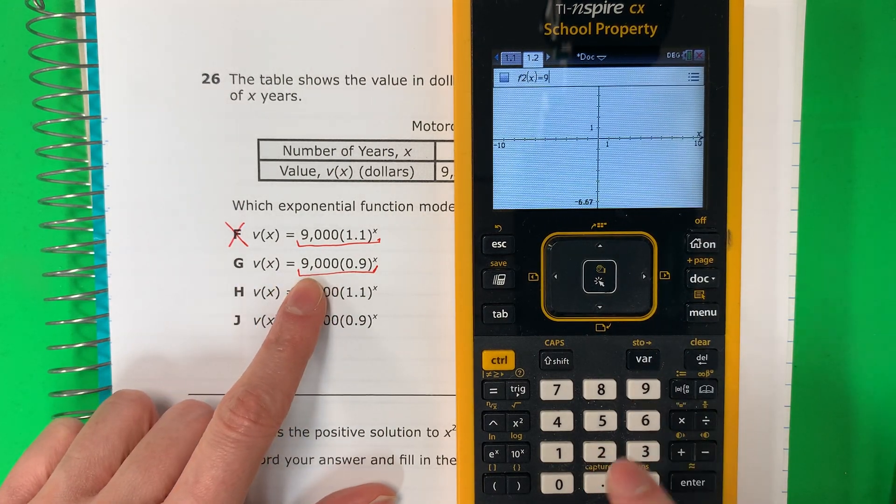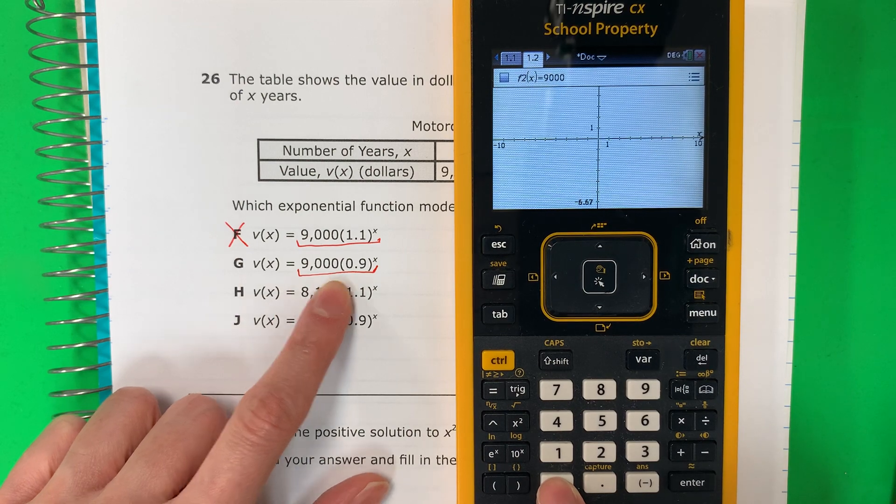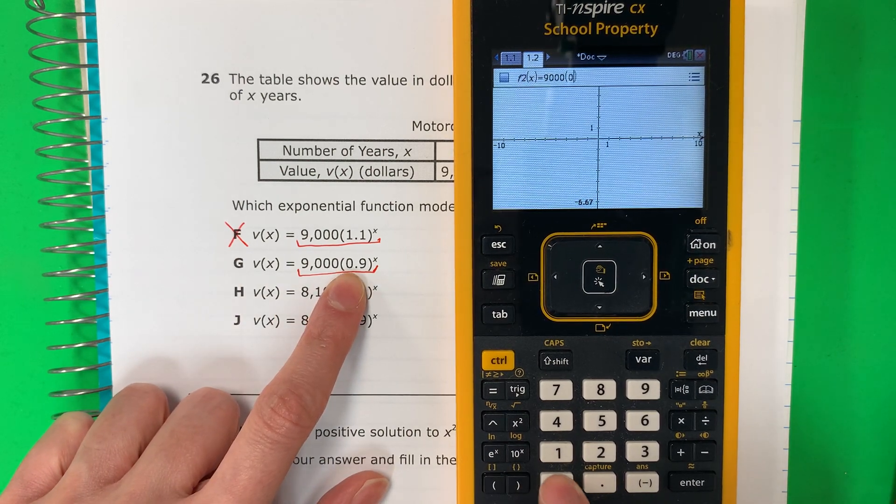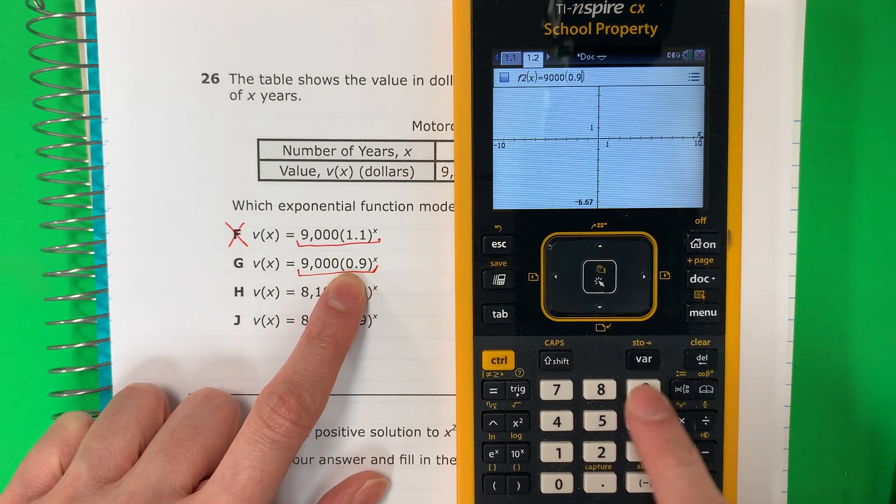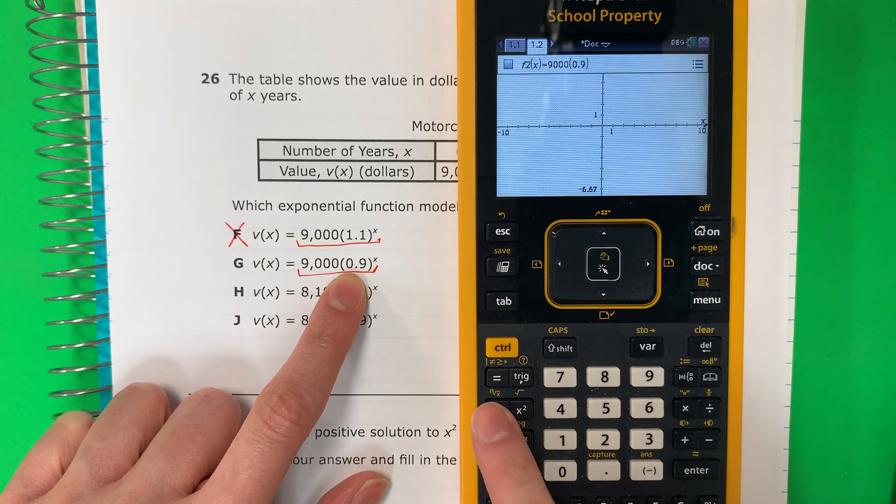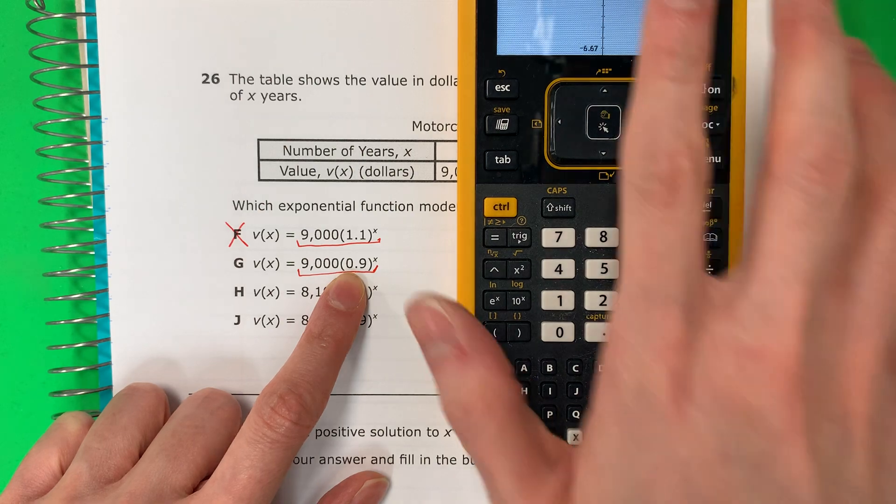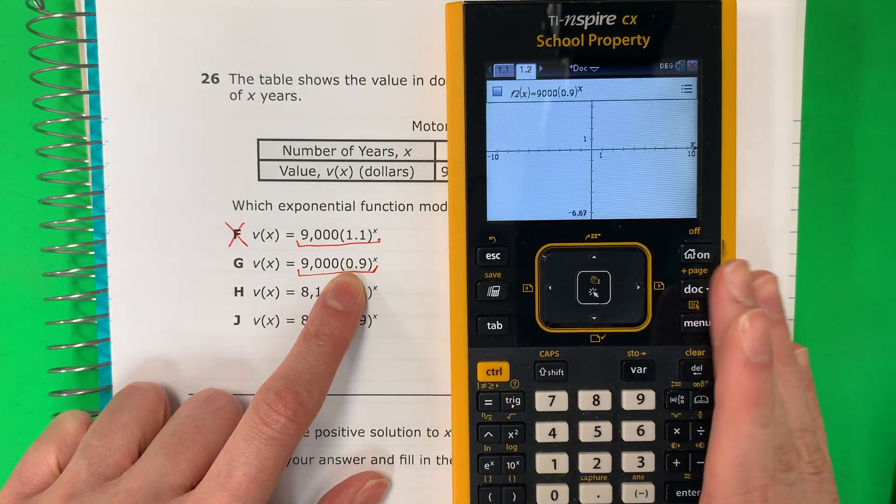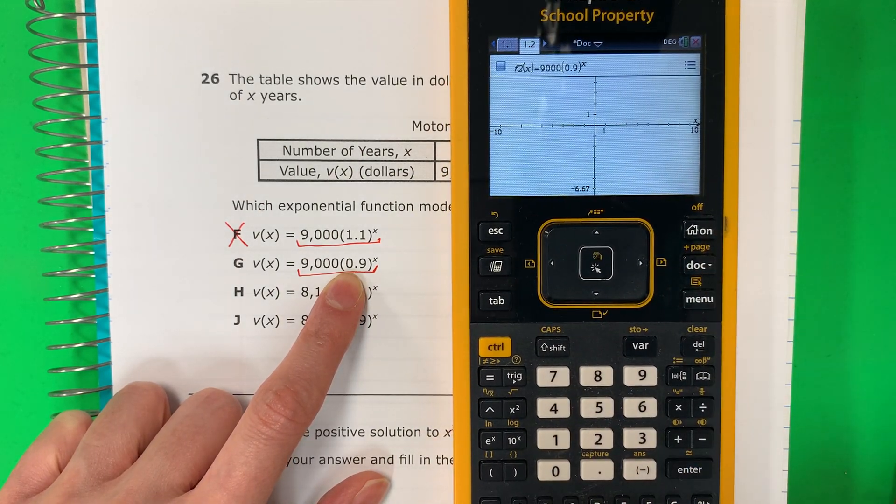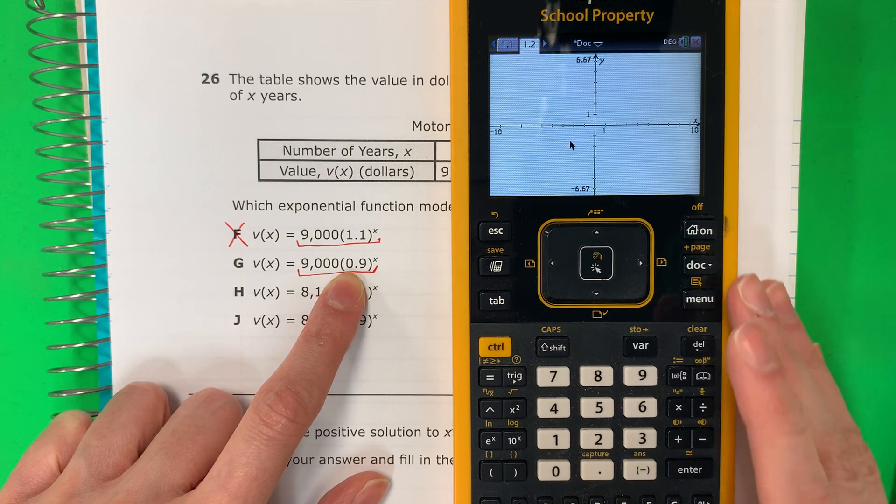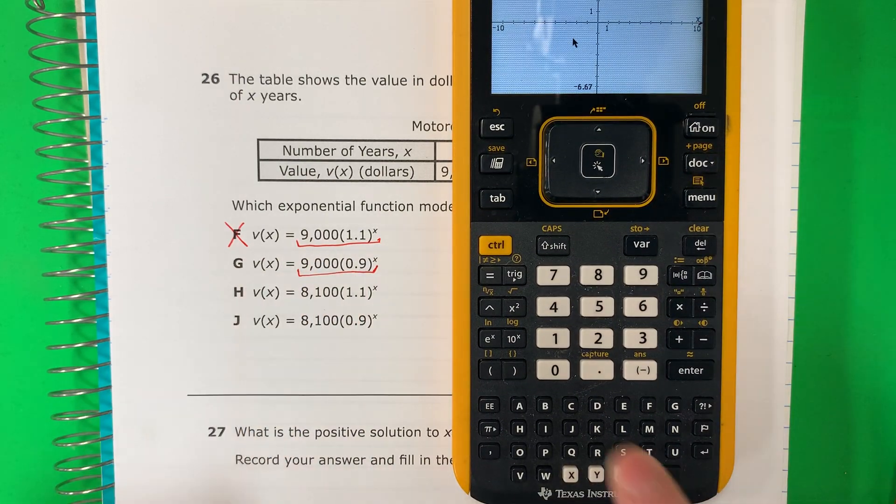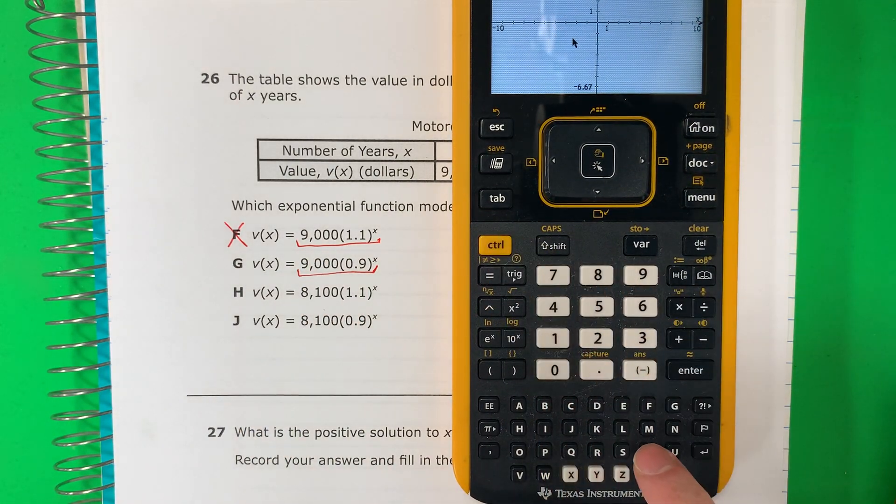Let's go ahead and put 9,000. No comma. Sin la coma. Parenthesis. 0.9. Parenthesis. Exponent. Exponente. And the X is here. Push enter. Okay. Now we need the table. Ahora necesitamos la tabla. So control T.